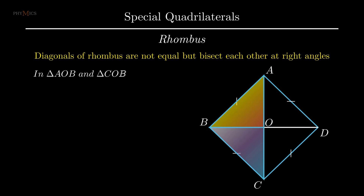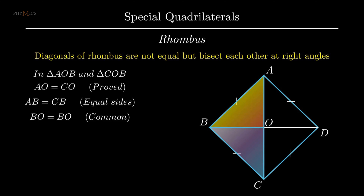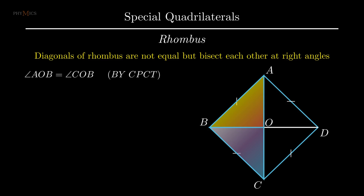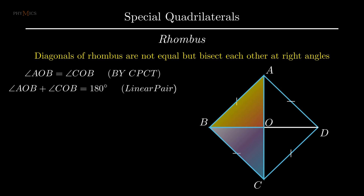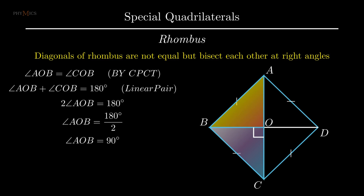To prove diagonals of a rhombus bisect each other at 90 degrees, consider triangle AOB and triangle COB. Since segment AO equals segment CO, side AB equals side CB as all sides of a rhombus are equal, and BO is the common segment to both triangles. Therefore by side-side-side rule, triangle AOB is congruent to triangle COB. By corresponding parts of congruent triangles, angle AOB equals angle COB. Since the sum of angle AOB and angle COB forms a linear pair equal to 180 degrees, twice angle AOB equals 180 degrees, so angle AOB equals 90 degrees. Hence diagonals of a rhombus bisect each other at right angles.